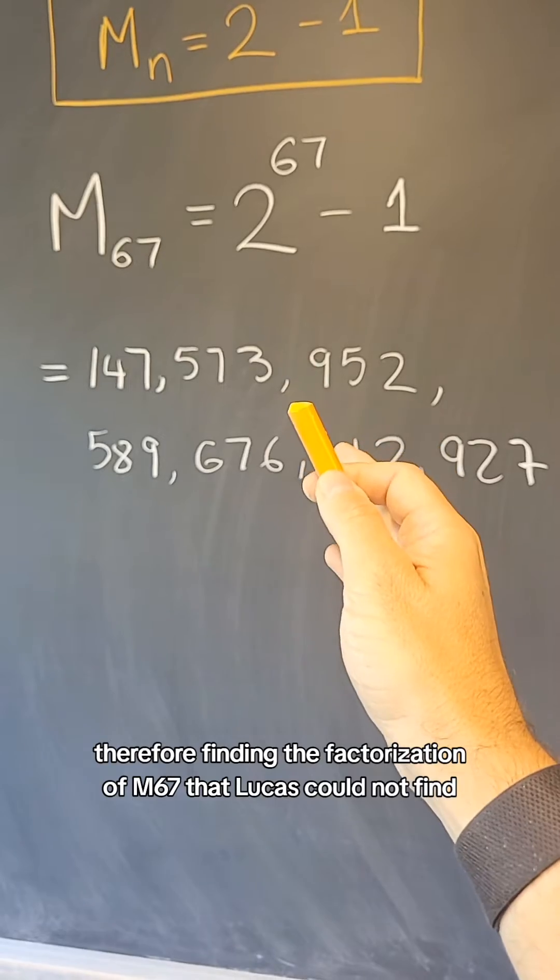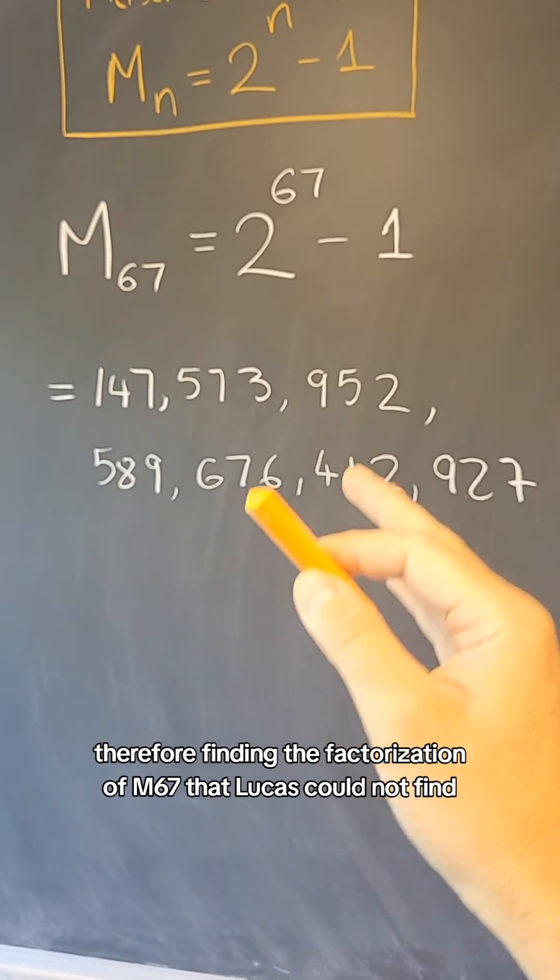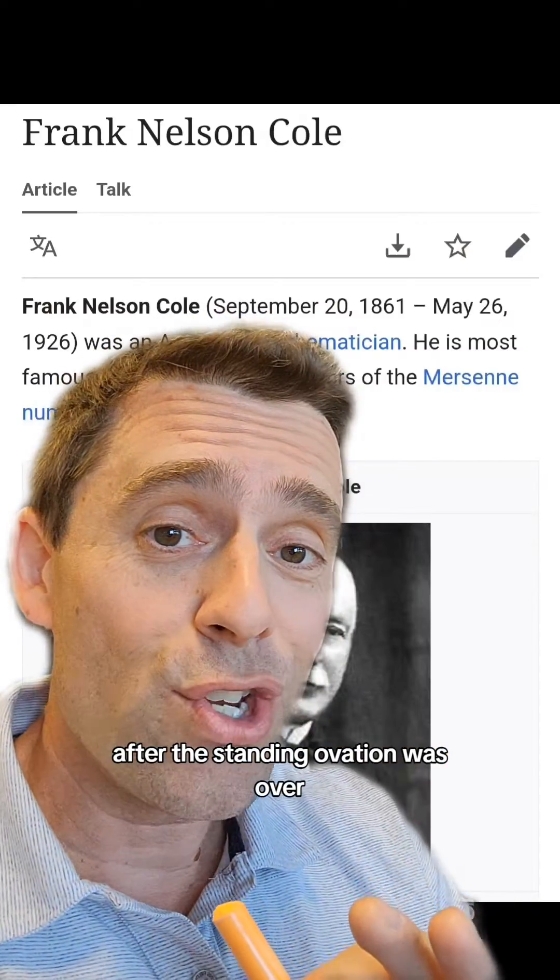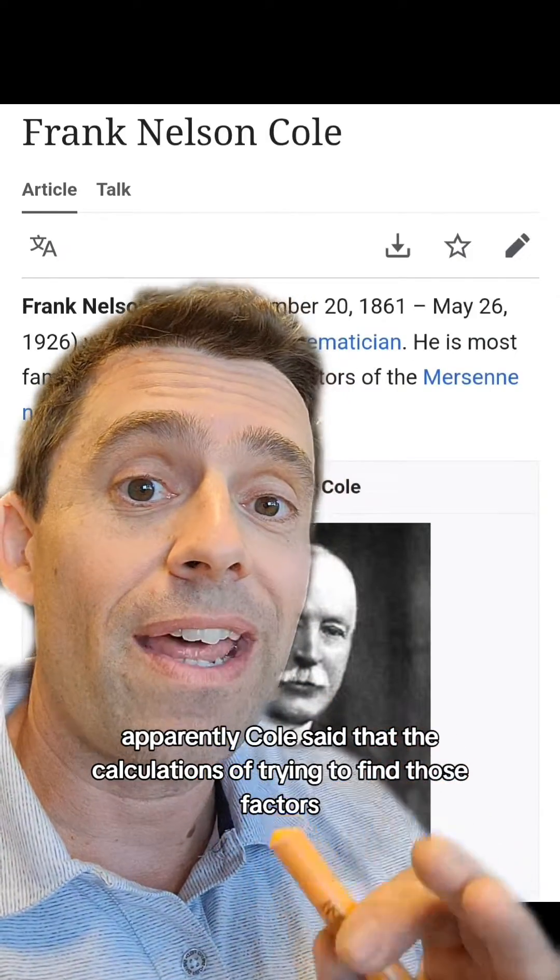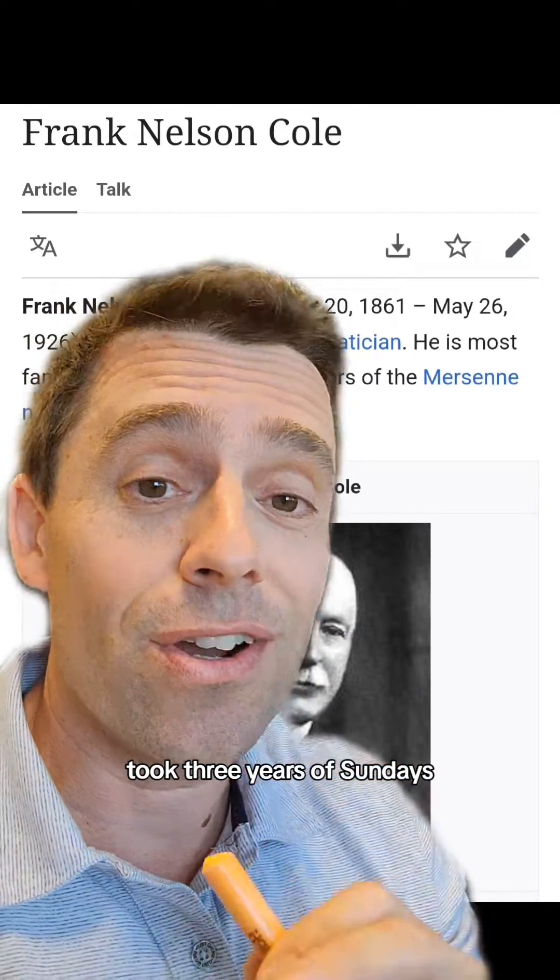Therefore, finding the factorization of M67 that Lucas could not find and then sat down and the crowd went wild. After the standing ovation was over, later on, apparently Cole said that the calculations of trying to find those factors took three years of Sundays.